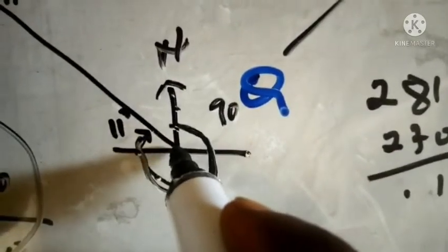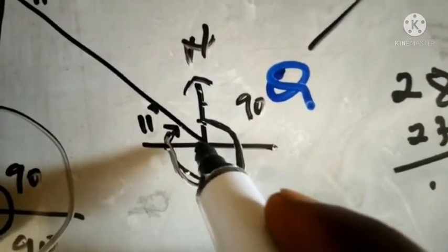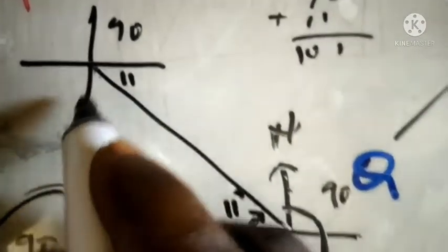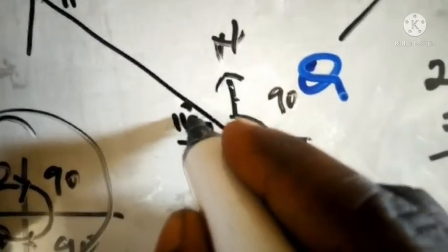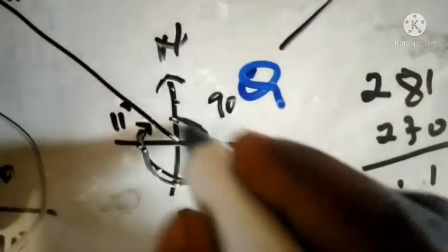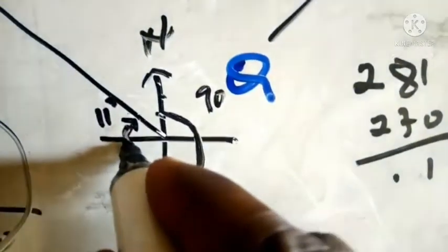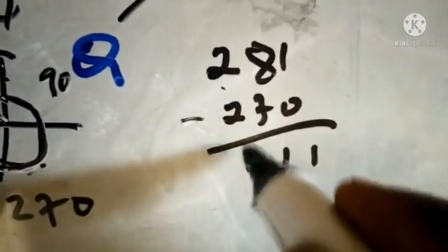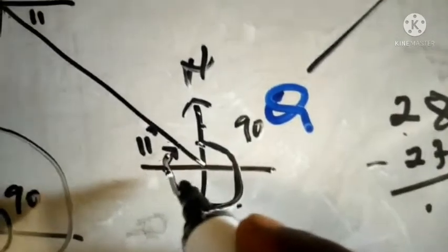We know that from north going clockwise, 270° brings us to west. We are given 281°, so we are just 11° past the west direction — 281 minus 270 gives us 11. So the position of P from Q is 11° past west, going towards north.